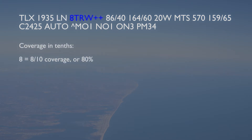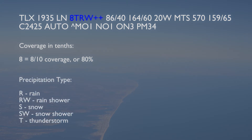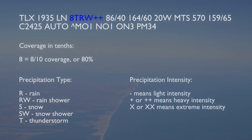Next, the coverage, intensity, precipitation type, and intensity are described. In this example, the coverage is 8 tenths, or 80%. The precipitation type is coded as one of five types: rain, rain shower, snow, snow shower, or thunderstorm. Precipitation intensity is indicated by a minus symbol for light intensity, a plus or plus-plus symbol for heavy intensities, and an X or XX for extreme intensities. The example report indicates 8 tenths coverage of thunderstorms and heavy rain showers.